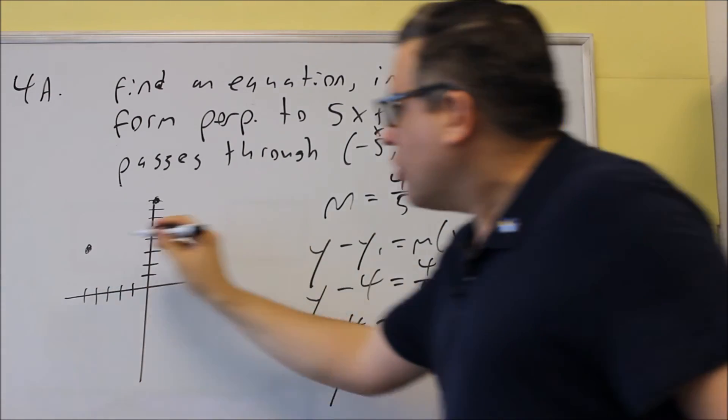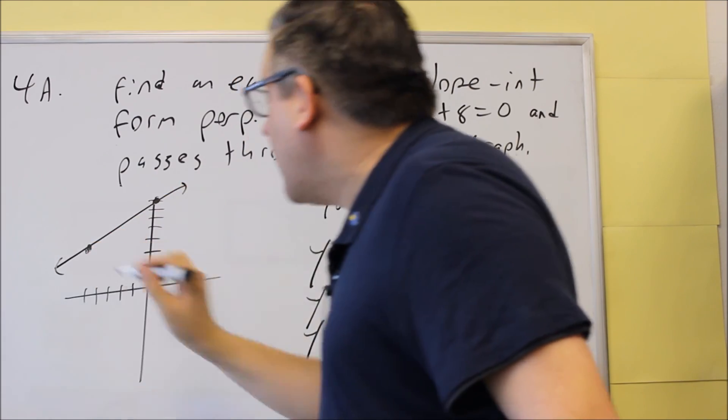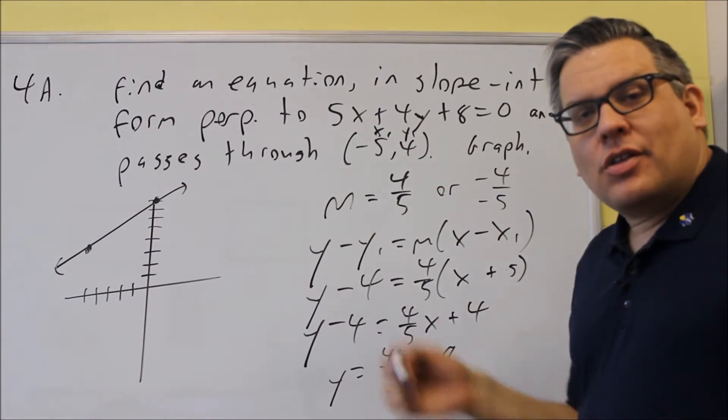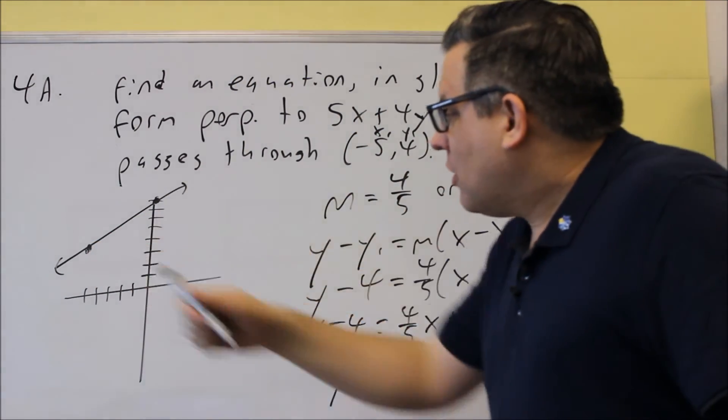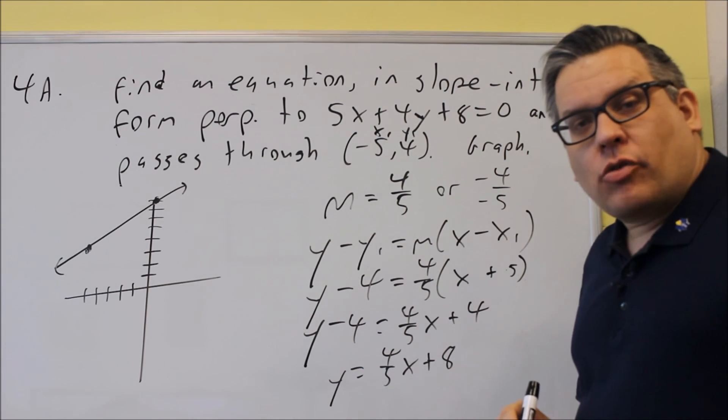And guess what? That point it goes through is the same one that we had here, negative 5, 4. That's exactly where we should be at. So now it verifies that the line, in fact, does go through the correct point. So that's going to be our correct equation, graphed.